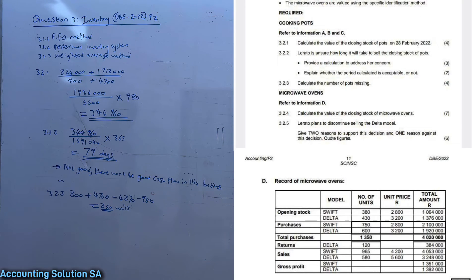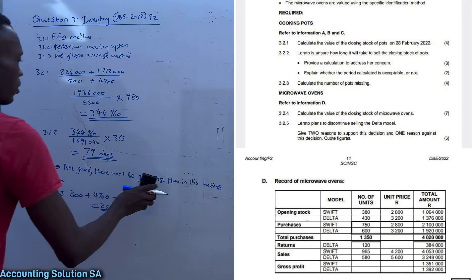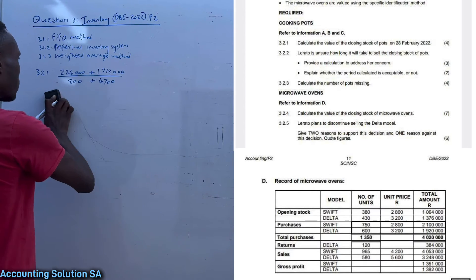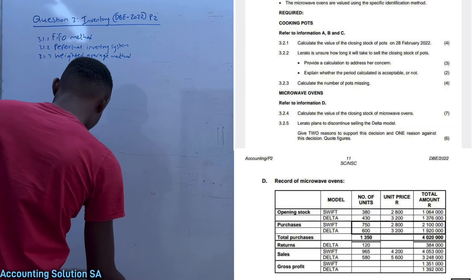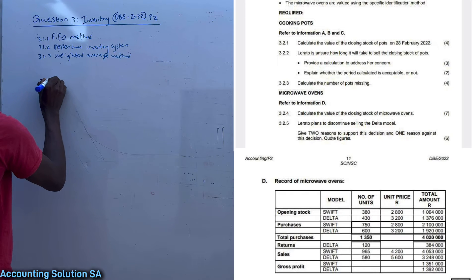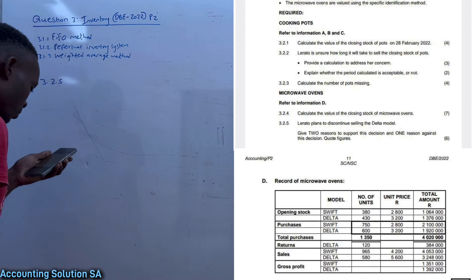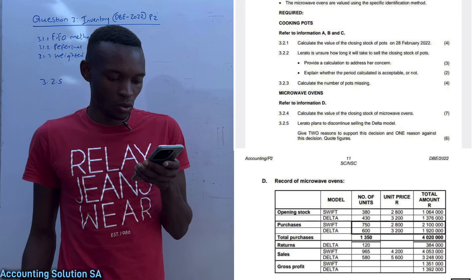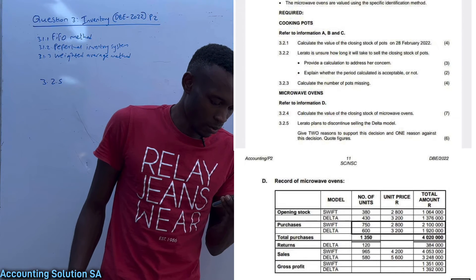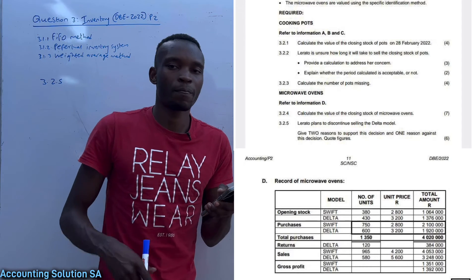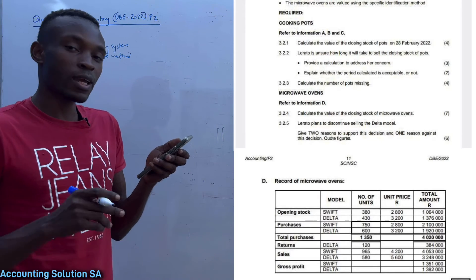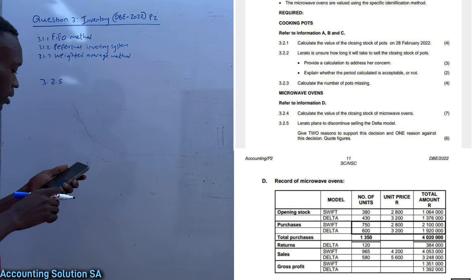Now we move to the next section — microwave ovens. We are going to use the specific identification method. Let's go to question 3.2.4 and 3.2.5. They say to refer to information D and calculate the value of closing stock of microwave ovens, followed by a theory question. Remember microwaves use the specific identification method.